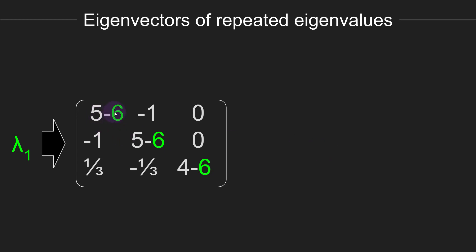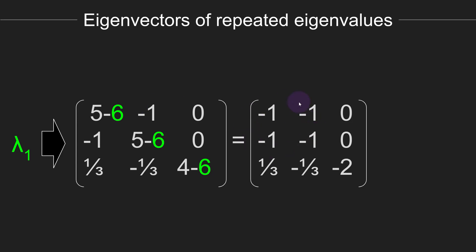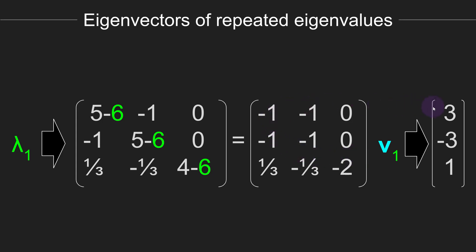Let's start with the first eigenvalue of 6. We shift this matrix by 6 times the identity matrix, giving us a shifted matrix, and we need to find a vector in its null space. It turns out a good solution here is [3, −3, 1]. You can verify: 3 times −1 is −3, minus 3 times −1 gives +3, and 1 times 0 is 0, so −3 + 3 + 0 = 0. This works for the first row and also for the second row, confirming this is a valid eigenvector.